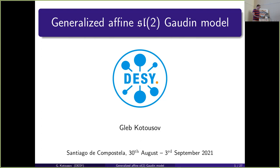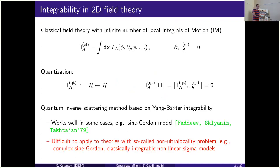An important feature of a two-dimensional classically integrable field theory is the presence of an infinite number of local integrals of motion. These are dynamical quantities given by an integral over a tensor density built from the fundamental fields phi, as well as their derivatives in t or x, and they are conserved as a consequence of the equations of motion.